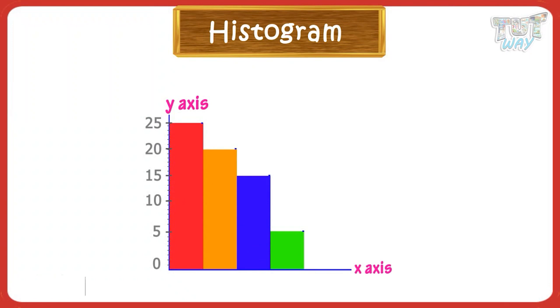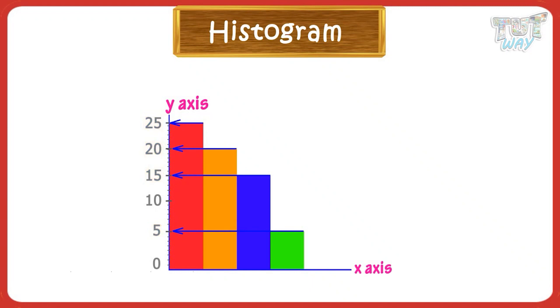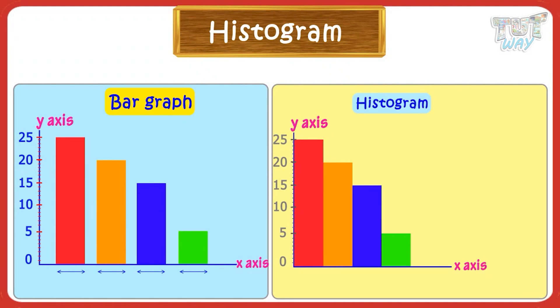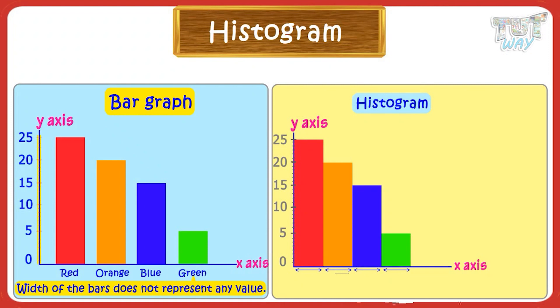Let's now learn about a type of data chart called histograms. A histogram is also a bar chart with rectangular bars, like a bar chart. Here too, the lengths of bars represent the values of entities. The difference from a bar chart is that in a bar chart, the width does not represent any value but the name of the entity. But in histograms, the width of rectangular bars represents a class interval. That is, the entire range of values is divided into a series of small intervals, and then we count how many values fall into each interval.